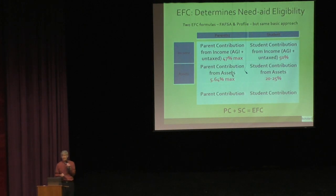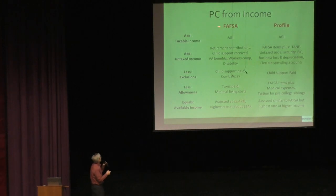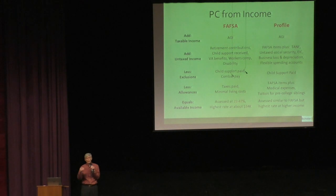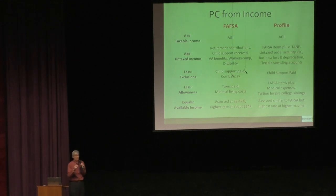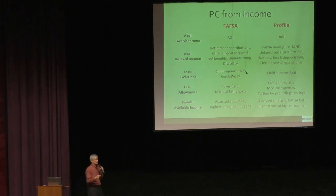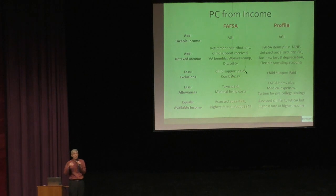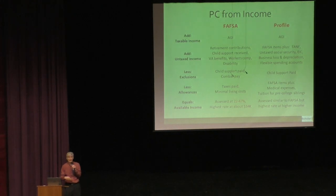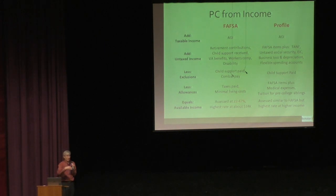The parent contribution from income starts with adjusted gross income — for 2017, that's the bottom line of page 1 of your 1040; for 2018 it's line 7. Then they add certain items of untaxed income. The most common types are tax-deferred contributions to a retirement plan — such as 401k or deductible IRA contributions — which are added back as untaxed income. The other most common type is child support payments received in the case of a divorced or separated family.